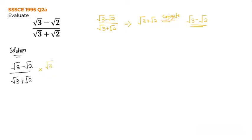So we use this conjugate to multiply both the top and the bottom, giving us root 3 minus root 2 times root 3 minus root 2. Note that I am not using the numerator to multiply both the top and bottom — it just happens that in this case they are the same. What I'm doing is taking the denominator and finding its conjugate by changing the sign between the two terms.